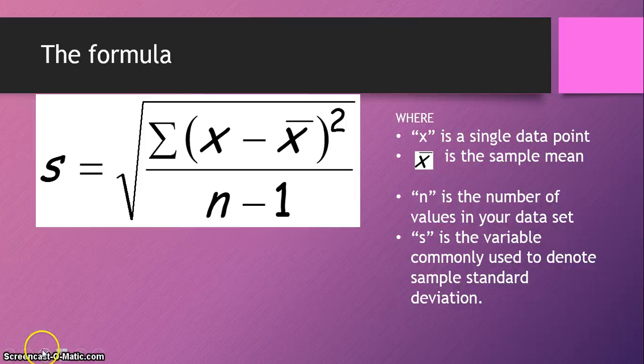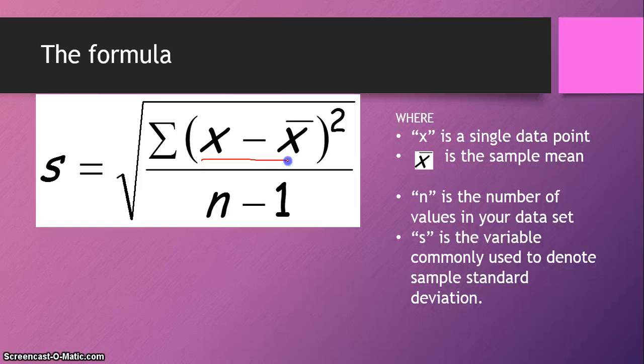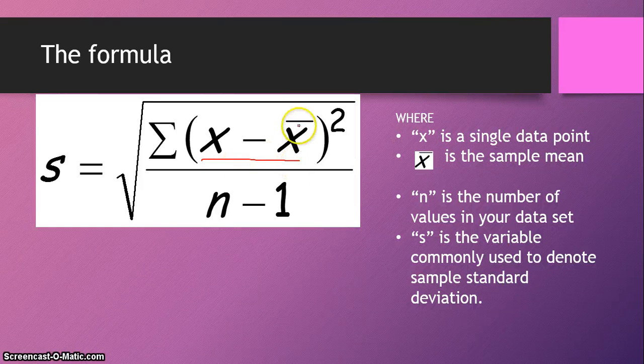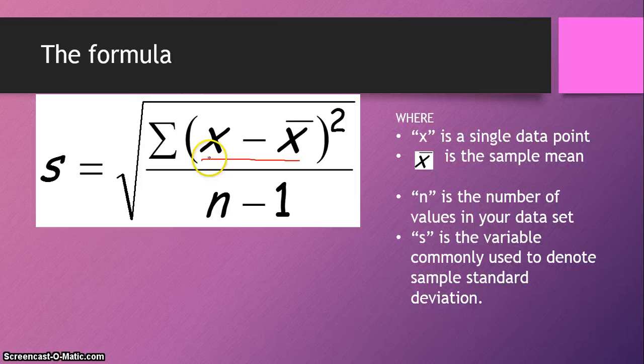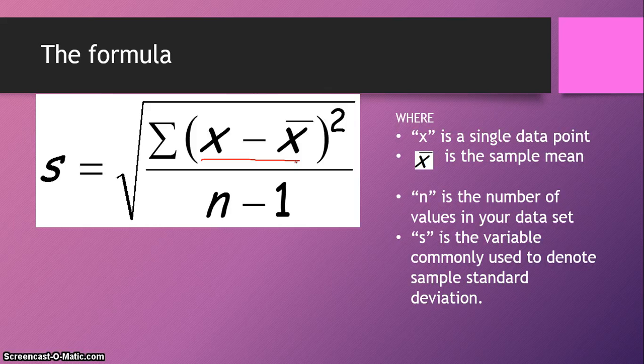If I can find where my mouse went. Oh, there it is. Okay. This part right here, this x minus x bar, of course we know this x bar is the mean, right? And we know x is your data point, so we're subtracting a data point from the mean. And that is a deviation. That's telling us how far away a data point is from the mean.